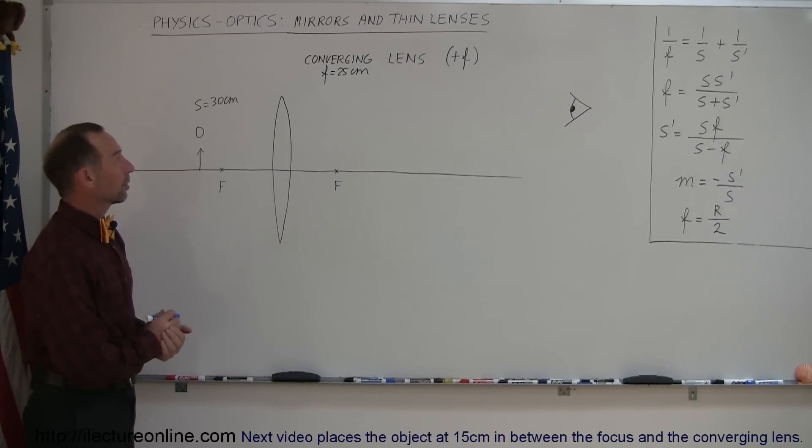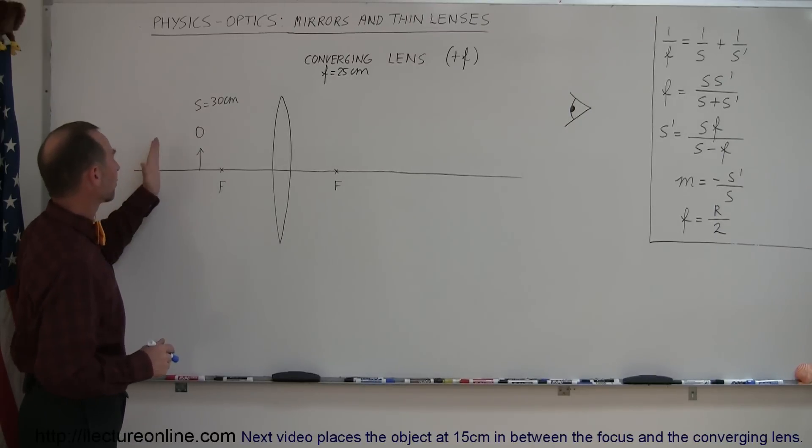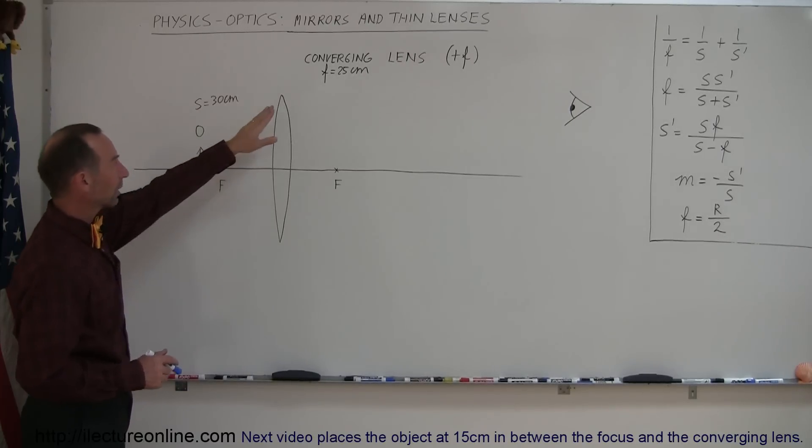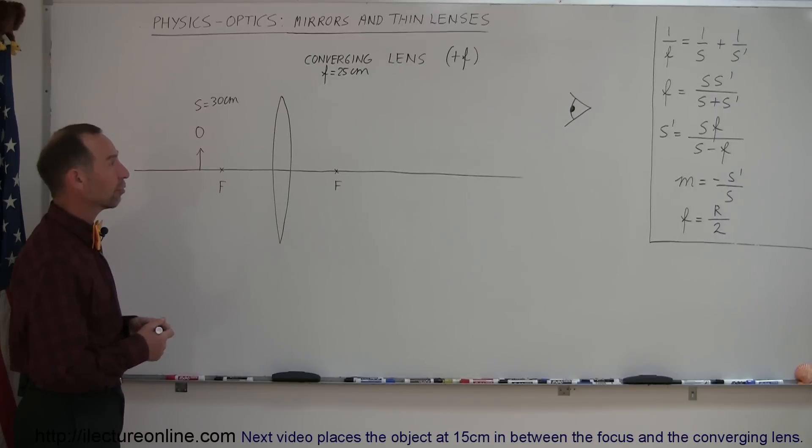Okay, our next example here with thin lenses. We're still with converging lenses. Notice how we're starting to move the object closer and closer to the lens. The object now is at a distance of 30 centimeters. The focal length of our lens is still 25 centimeters. Converging lens means that it's a positive focal length.